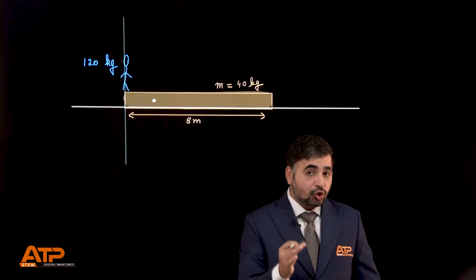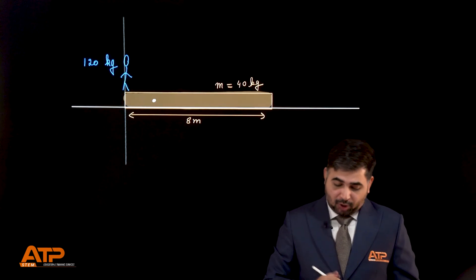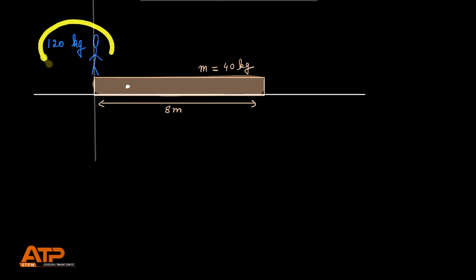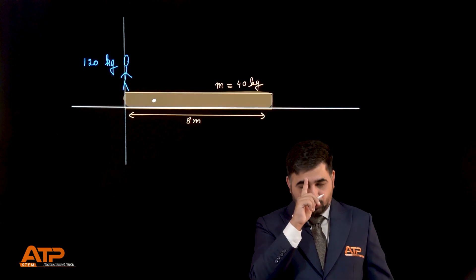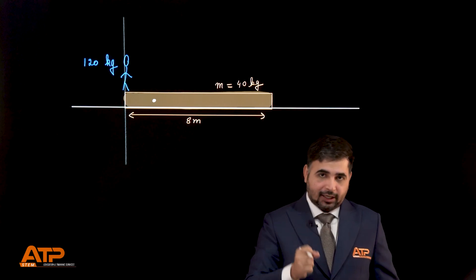Now, let's see if you have understood this shortcut. Now, in this problem, we have a person of mass 120 kg standing on a plank of length 8 meters. Plank mass is 40 kg. It's the same situation again. The person has to go to the other side. We want to know how much would be the distance moved. Pause the video right now. Visualize this. See if you can get the answer.